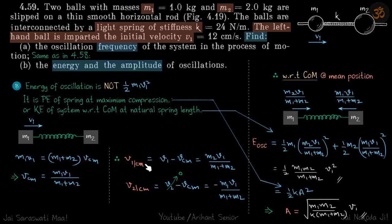So let's find velocities of one and two with respect to center of mass. We have done that a lot of times before, so you will get v1 with respect to cm is this and v2 with respect to cm is this.